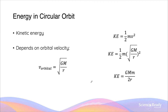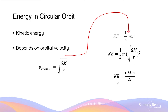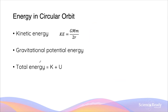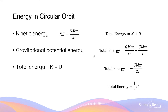Let's start looking at circular orbits. In circular orbits, the kinetic energy is dependent on the mass of the satellite or the planet and also its orbital velocity. The orbital velocity is given by the square root of GM over r, where capital M is the central mass. We can substitute this equation into the kinetic energy equation to get a simplified version: GMm over 2r.